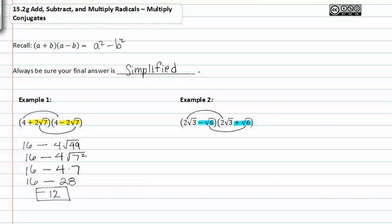Two root three times two root three is four root nine. And negative root six times positive root six is negative root thirty-six. If we look at the square root of nine, we know that nine is a perfect square of three. So we have four times three minus root six. We know that thirty-six is a perfect square of six and so we have four times three minus six. Four times three is twelve minus six gives us a final answer of positive six.